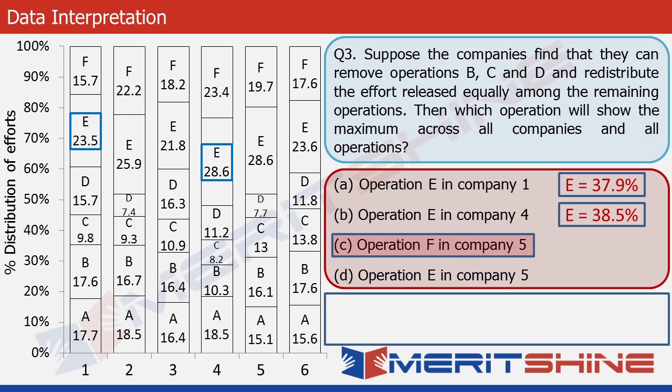Let's move to option C. The original effort for operation F in company 5 is given as 19.7%. Before doing the calculation, I can't help noticing that option D talks about operation E in the same company and that number is higher, much higher. It's 28.6. So if one among C or D has to be the answer, it has to be option D only. So we don't need to calculate for option C. Let's move to option D.